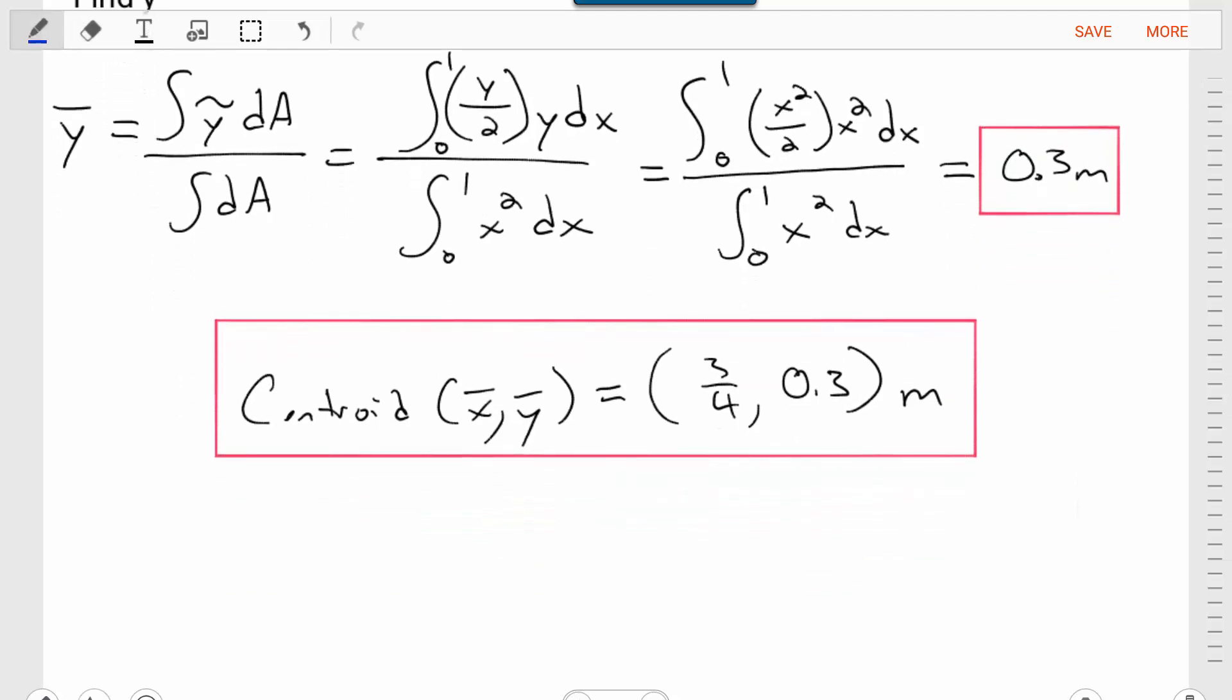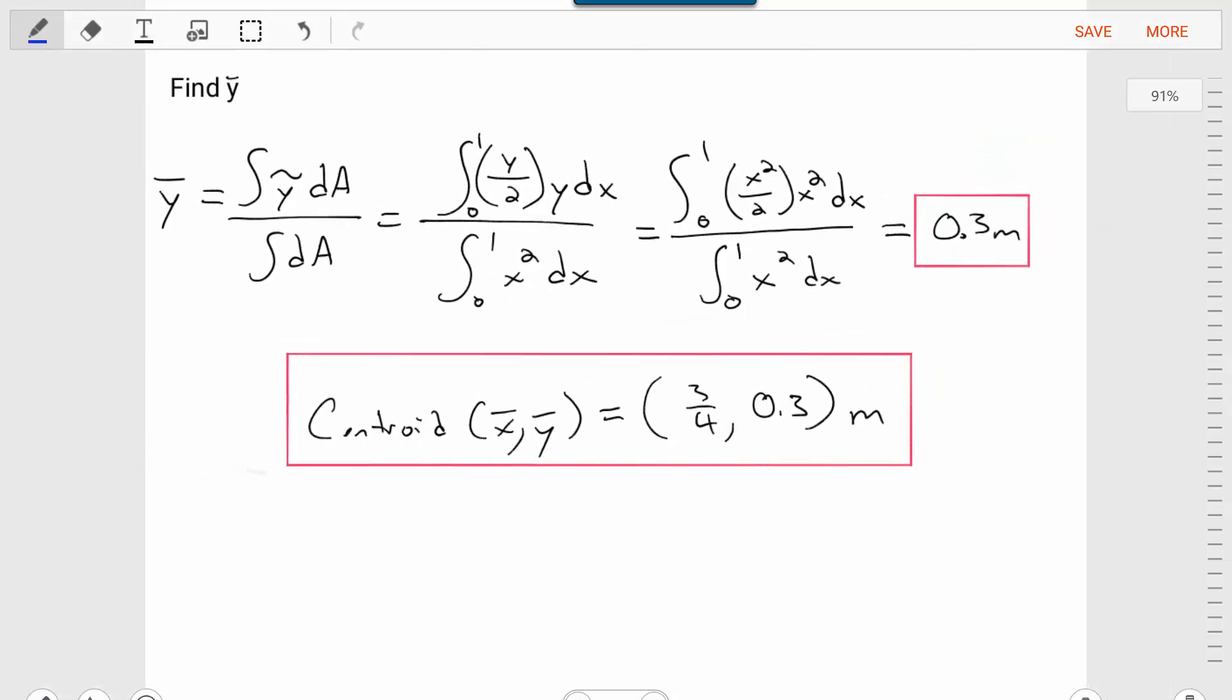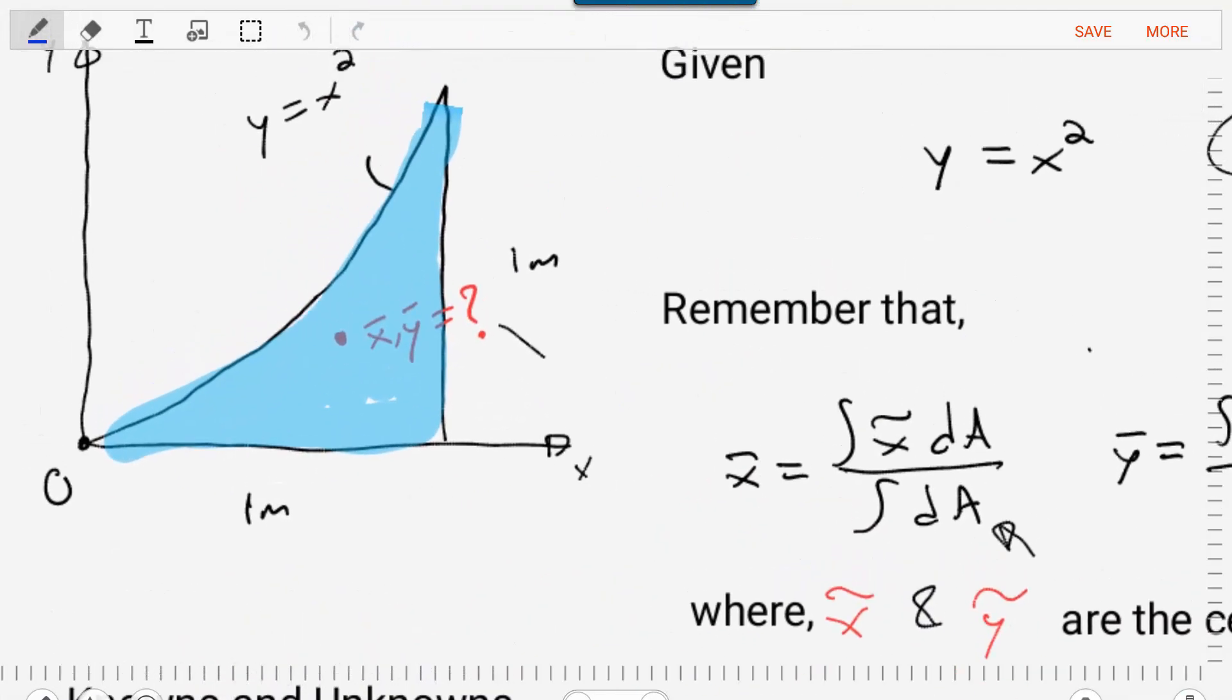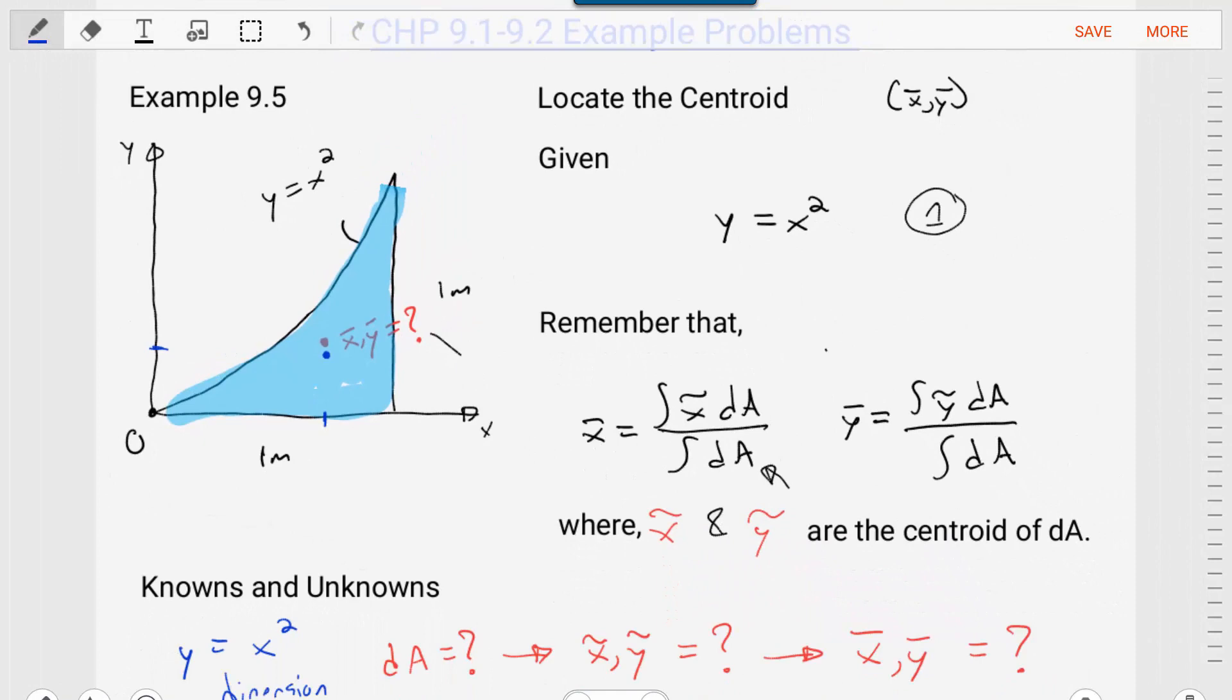If we put those two together, the centroid of area for that area we were given is at three fourths and 0.3 meters. It's always good to take these numbers and bring them back to our diagram and think, does that make sense? Does that seem like the right centroid for this body? Yeah, that seems like a reasonable centroid for this area. We've solved this problem. The challenge in all of these centroid problems is finding DA and finding the X tilde and Y tilde. Make sure to subscribe to this channel to get the latest videos from Statics. I'll see you in the next one.